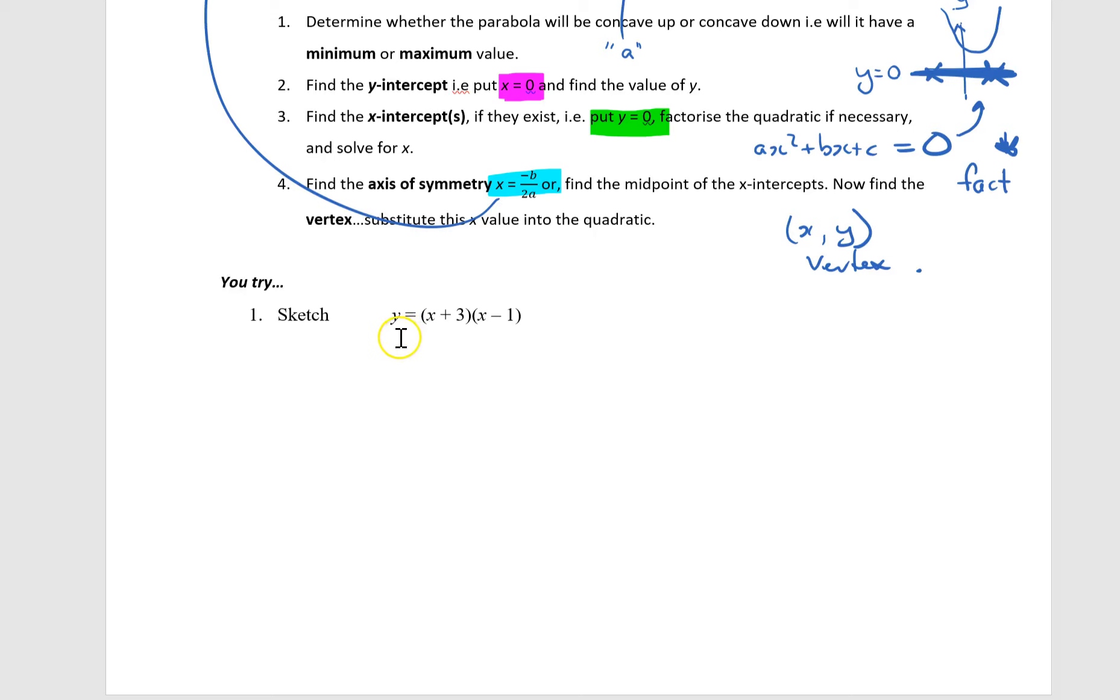This first example is rather kind in that you're being asked to sketch y equals bracket x plus 3, x minus 1. It's kind because we can see it would be a quadratic and it's already factored for you. So that's going to help us with solving for x to find the x-intercepts.